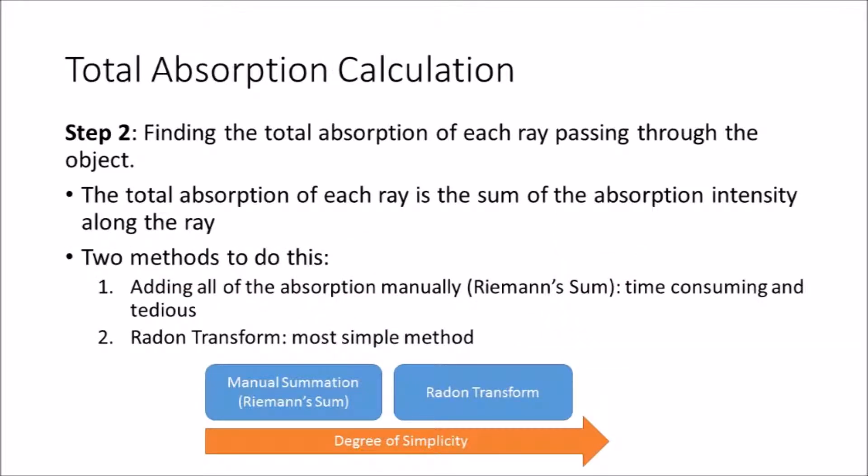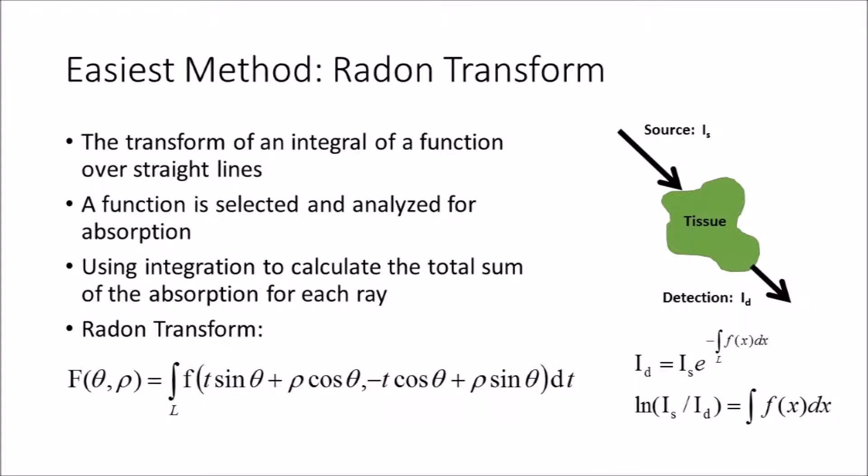After the absorption is measured and detected for each ray, the total absorption must be calculated in order to assign the absorption intensity to each ray. Two methods to find this calculation include adding the absorption manually as it varies throughout the ray's path or to use Radon Transform. Since manual summation is the tedious drawn out method, Radon Transform is the more common route used to do these calculations.